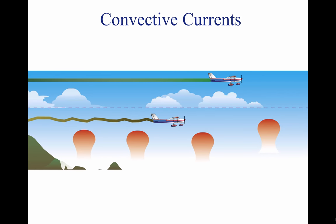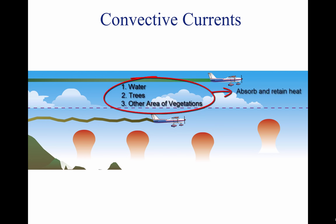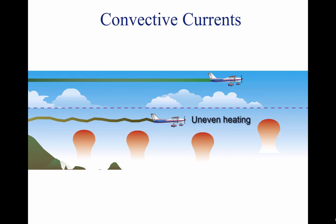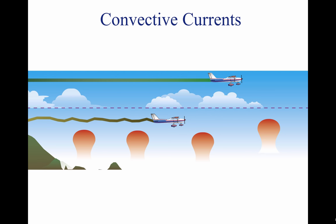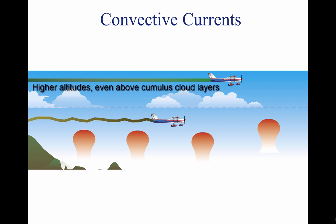Different surfaces radiate heat in varying amounts. Plowed ground, rocks, sand, and barren land give off a large amount of heat, while water, trees, and other areas of vegetation tend to absorb and retain heat. The resulting uneven heating of the air creates small areas of local circulation called convective currents. Convective currents cause the bumpy, turbulent air sometimes experienced when flying at lower altitudes during warmer weather. On a low-altitude flight over varying surfaces, updrafts are likely to occur over pavement or barren places, and downdrafts often occur over water or expansive areas of vegetation. Typically, these turbulent conditions can be avoided by flying at higher altitudes, or even above cumulus cloud layers.